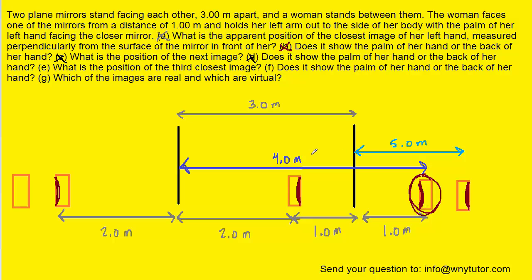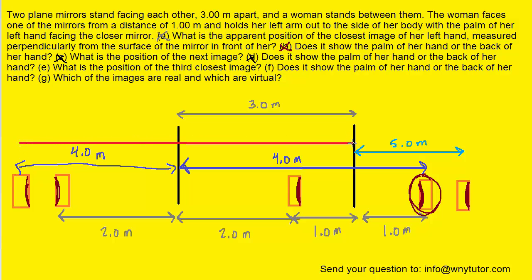So from this image to the far mirror, that distance is four meters, which means that the image formed in the farther mirror is also located four meters behind that further mirror. Since the palm is facing that mirror, the palm would show up in the image. Now here comes the key: the distance from this image all the way to that nearer mirror — you can pause the video and count it up — is seven meters, because from the image to that mirror is four, and then the distance between the mirrors is three, so that's a total of seven. Which means, finally, an image will form seven meters behind this mirror right here.